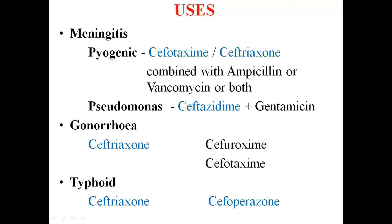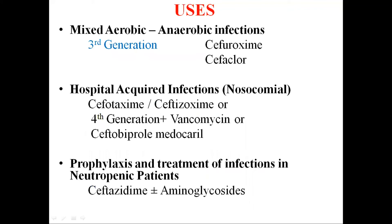Cephalosporins are preferred over fluoroquinolones, especially in children, due to certain limitations of fluoroquinolones in that age group. The advantages of cephalosporins in typhoid include early resolution of symptoms, lower risk of relapse and complications, and prevention of the carrier state due to their bactericidal action. For mixed aerobic-anaerobic infections in cancer patients, colorectal or pelvic surgeries, or obstetrical complications, third generation cephalosporins are preferred; cefuroxime and cefoxitin (second generation) have also been used.